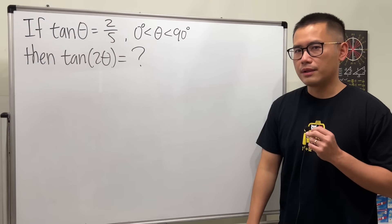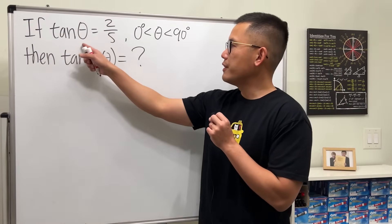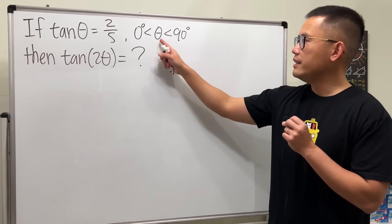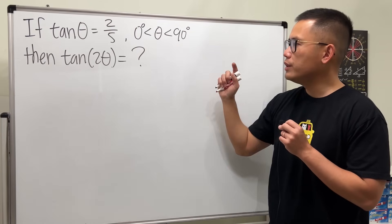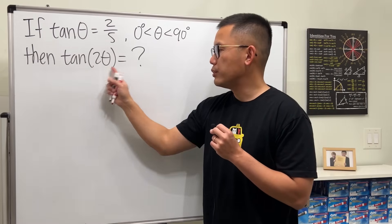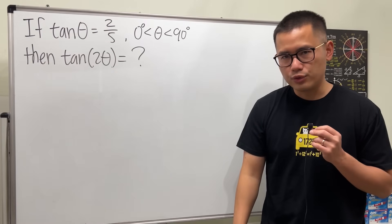I posted this question on my Instagram, now let's see how we can solve it. We have tan(θ) = 2/5 and the angle θ is in between 0 and 90 degrees. The goal is to find out the value for tan(2θ).